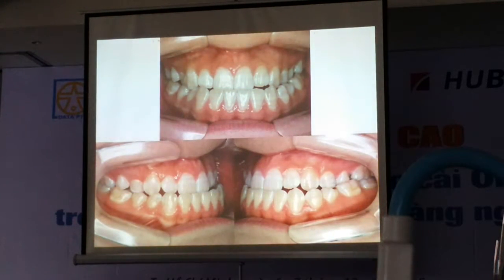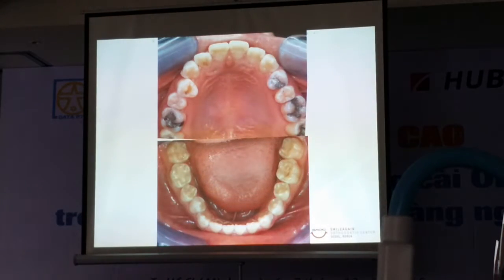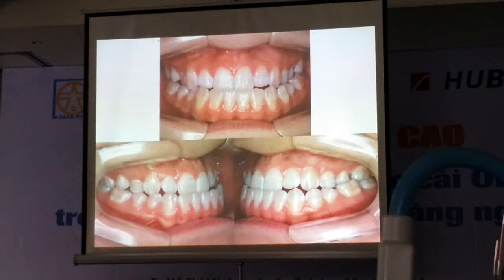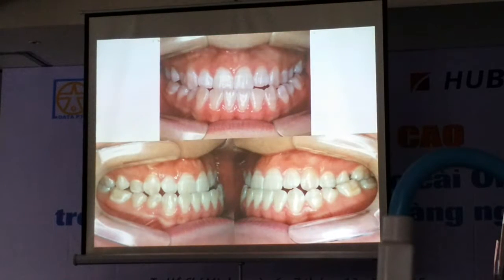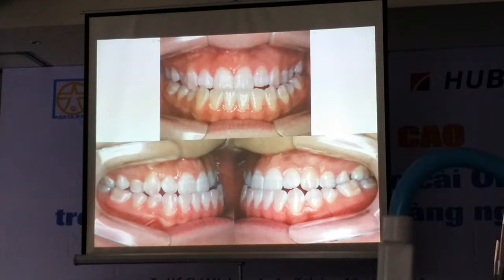But if it is a camouflage case, it's very difficult, right? So we cannot extract her bicuspid. If we extract the first bicuspid in the lower, then we have to extract the upper bicuspid too. We have to give a second molar occlusion.